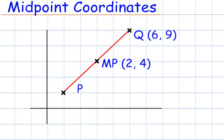In the third example, you can see that we're given the end of the line Q at 6, 9, and we're given the midpoint 2, 4, and we have to find the point P.